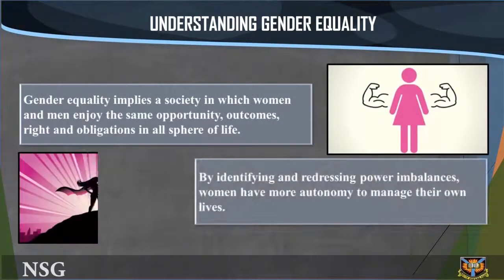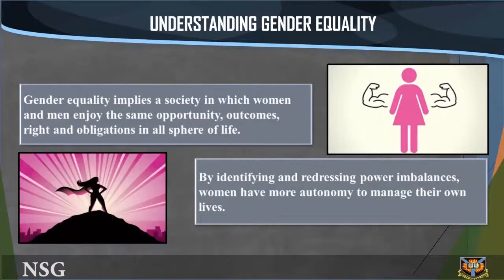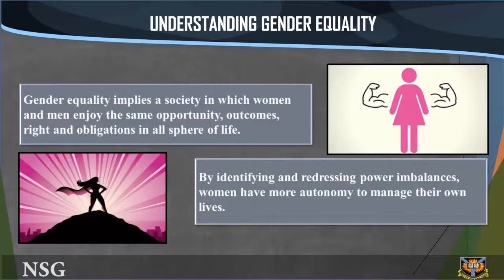Understanding gender equality. Gender equality implies a society in which women and men enjoy the same opportunity, outcomes, rights, and obligations in all spheres of life. Equality between men and women exists when both sexes are able to share equally in the distribution of power and influence, have equal opportunity for financial independence through work or through setting up a business, and enjoy equal access to education and opportunity to develop personal ambition. Education is a critical aspect of promoting gender equality, and the empowerment of women, with a focus on identifying and redressing power imbalances and giving women more autonomy to manage their own lives.